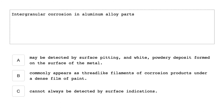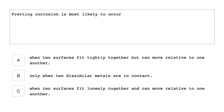Intergranular corrosion in aluminum alloy parts cannot always be detected by surface indications. Fretting corrosion is most likely to occur when two surfaces fit tightly together but cannot move relative to one another.